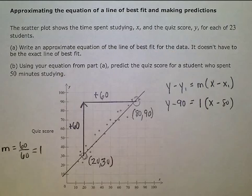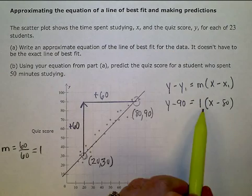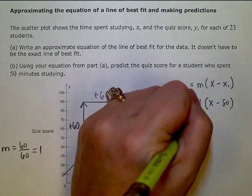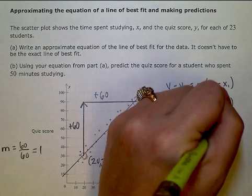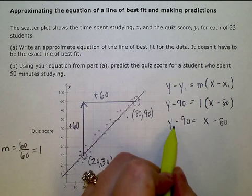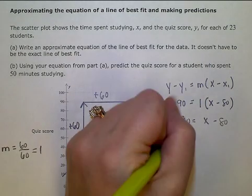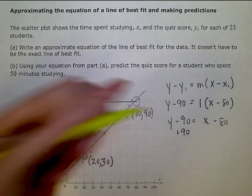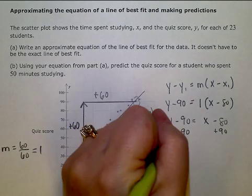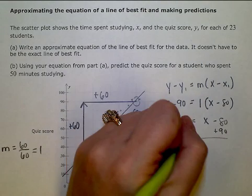So there's my equation. One times anything is just itself, so I can simplify to this. To put it in y equals form, I need to get rid of this negative 90. I'm going to add 90 to zero that out and keep my equation balanced by doing the same thing on the other side.